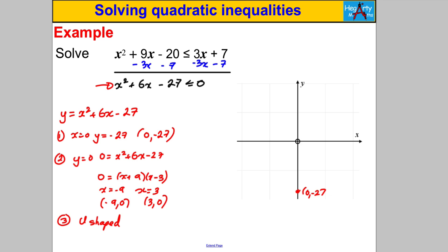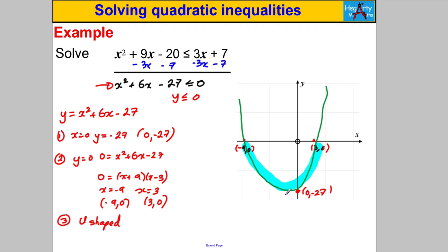Plotting those points and drawing the u-shape, we're looking for where y ≤ 0 on the graph. The y-values are less than or equal to 0 between the two roots, so the answer is the x-values between -9 and 3. Using less-than-or-equal-to signs: -9 ≤ x ≤ 3. That is our answer for this question and we're done.